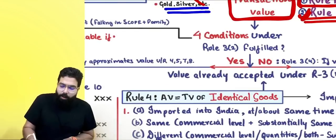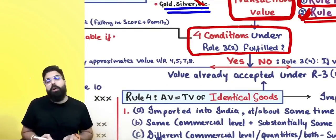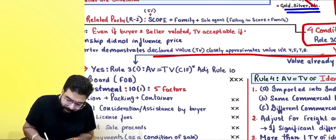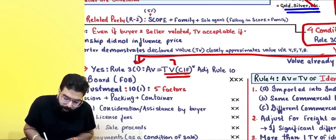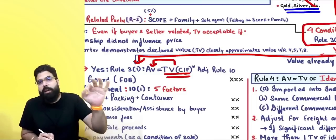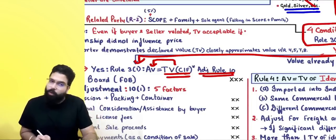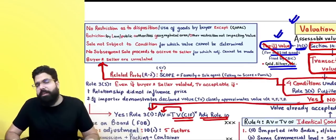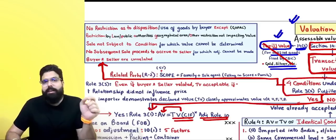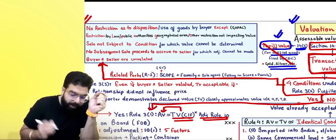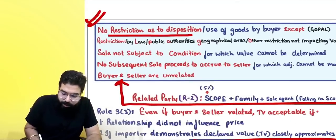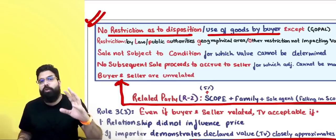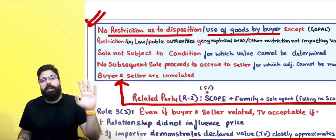If the proper officer does not have a doubt, you must fulfill Rule 3(2) — four conditions. If you fulfill all four conditions, your transaction value becomes the acceptable value, subject to adjustment under Rule 10. The four conditions under Rule 3(2) are: first, no restriction as to the disposition or use by the buyer. There should be no restriction on how you use the goods or how you further sell them.